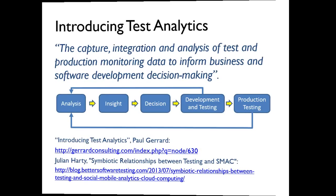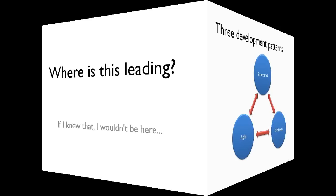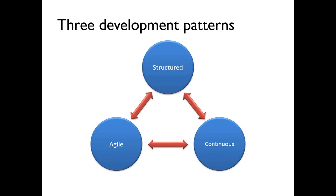So where does that lead us? It's all very well saying change is inevitable and continuous. There's stuff happening that is a little bit scary because it doesn't fit the way I work. I want to suggest, firstly, that continuous isn't the same as agile. Although it seems to be emerging out of agile organizations, I think it's a different set of disciplines. I've created a model of three patterns — agile, structured, and continuous — and I haven't time to go into full detail here.